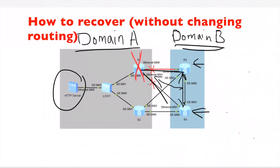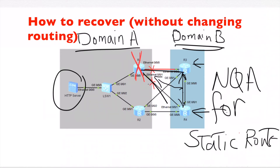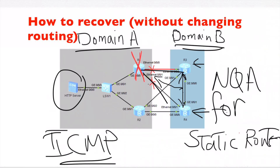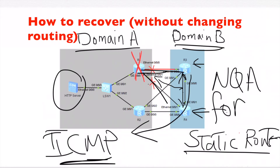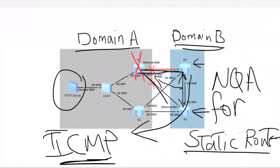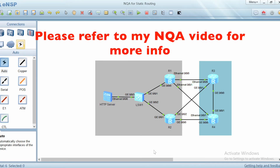The solution to this issue is to use NQA for the static route. NQA will allow us to perform an ICMP test to R1's IP address on the Ethernet trunk. If this IP address is not reachable, the static route will be invalidated and suppressed from the routing table, and the backup static route to R2 will become active. Let's head to the lab now.